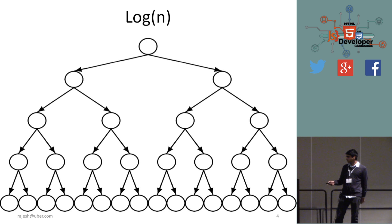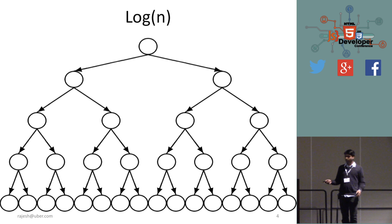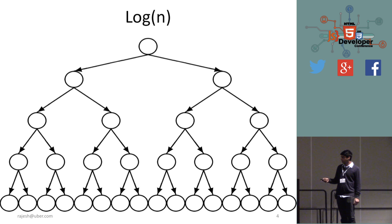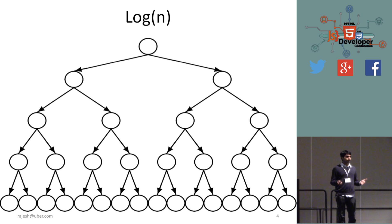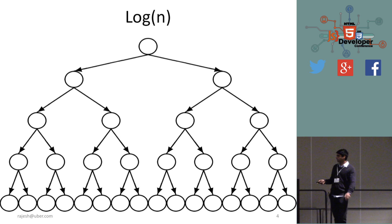For log n, at each time stamp two cells combine into one. So we start with 16 at time stamp one, they combine to form eight at time stamp two, then four, then two, then one. The length of this tree is log n. So if I can divide my problem in half every time, the number of steps it takes to process the input is log n — and that's the height of the tree.